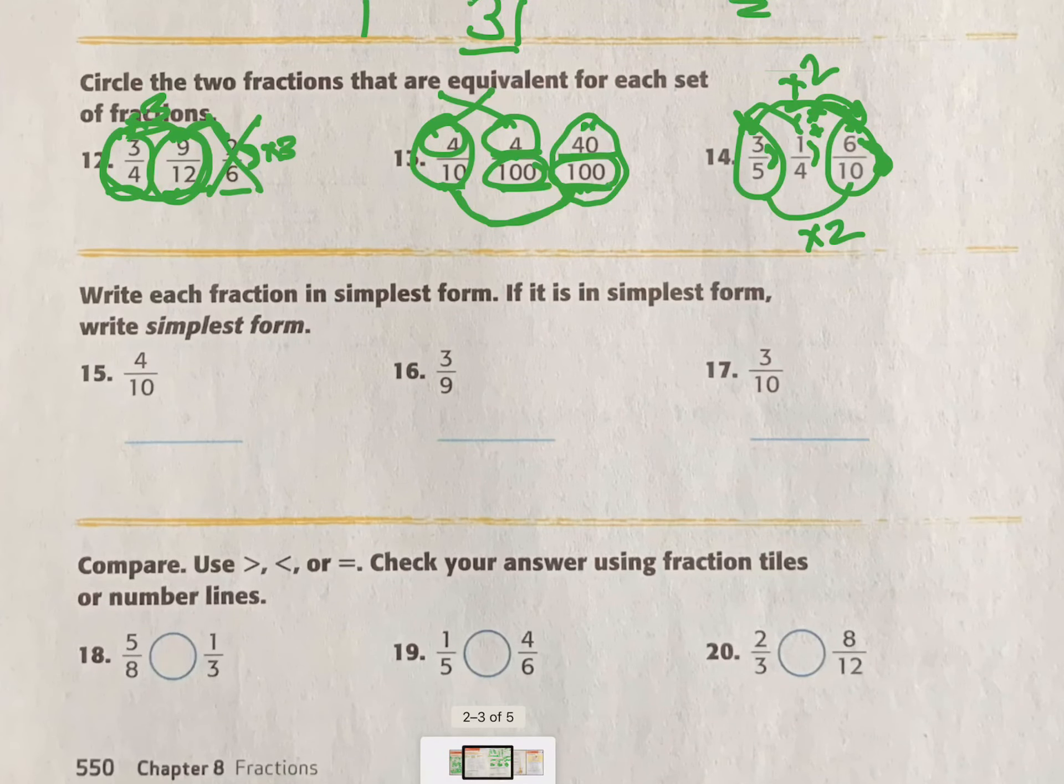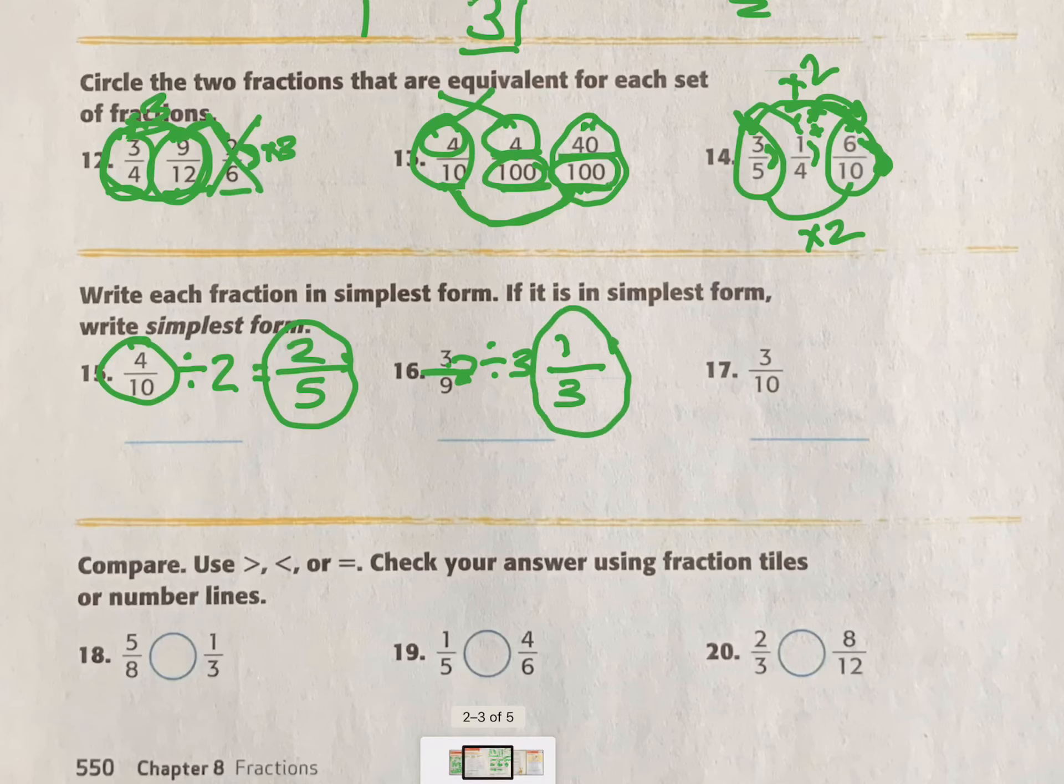Write each fraction in simplest form. If it is in simplest form, write simplest form. Well, 4 and 10, they are both even. So I know I can divide by 2. 4 divided by 2 is 2. 10 divided by 2 is 5. 2/5 is my simplest form. 3 and 9. Can 3 go into 9? Yes. So that makes that my greatest common factor. So then I divide them both by 3. 3 divided by 3 is 1. 9 divided by 3 is 3. That is my simplest form.